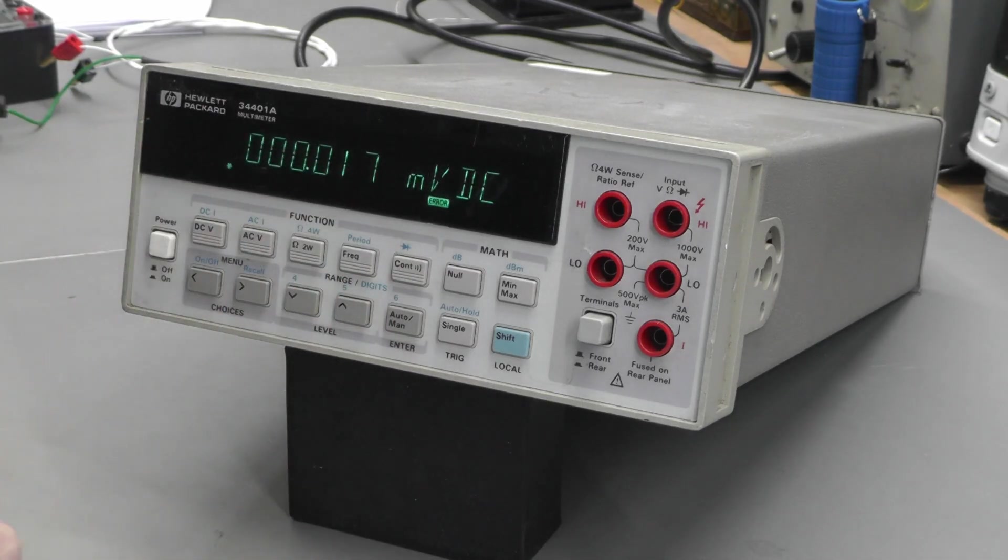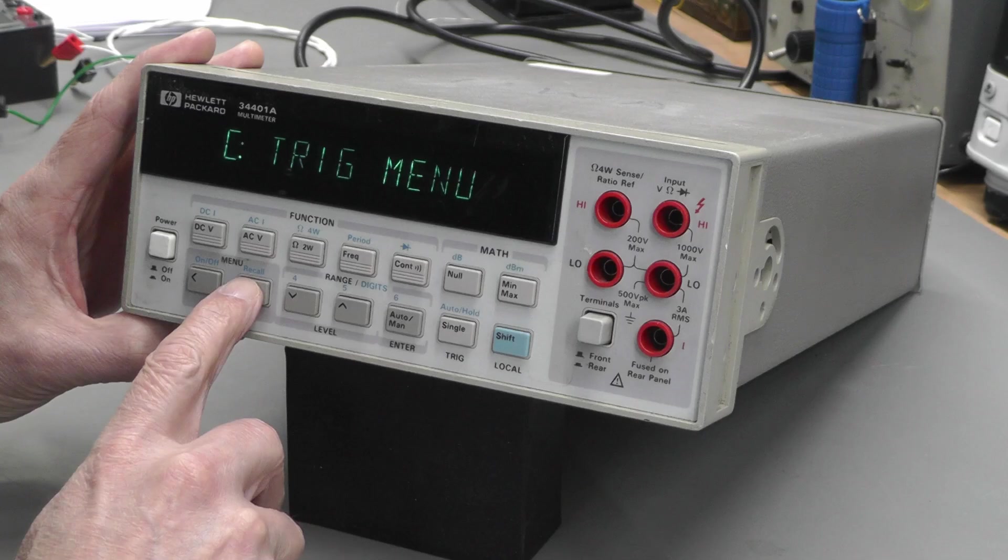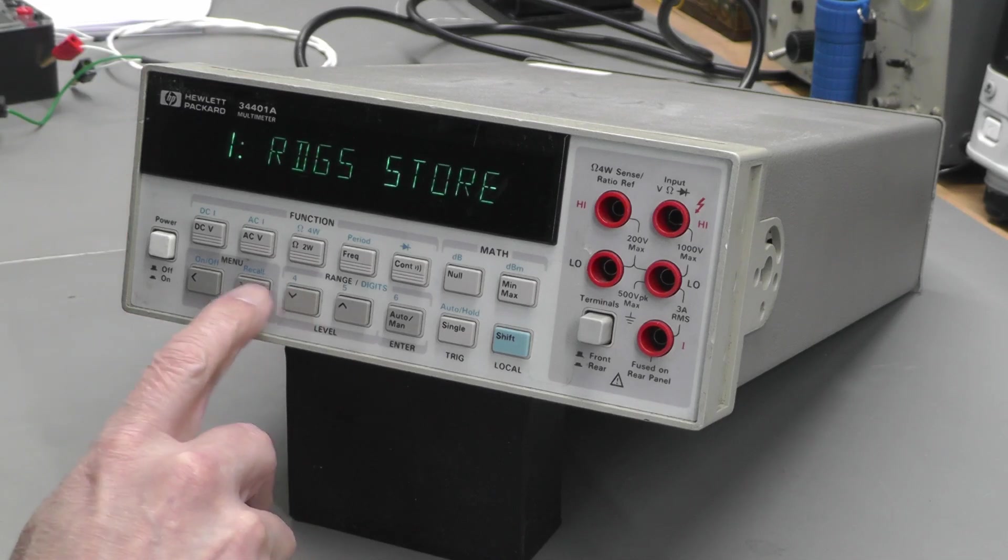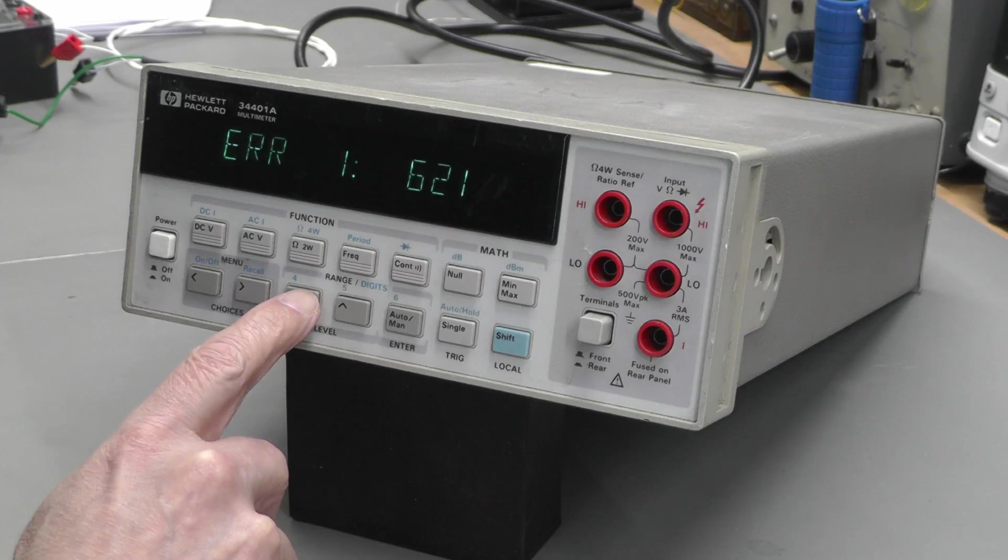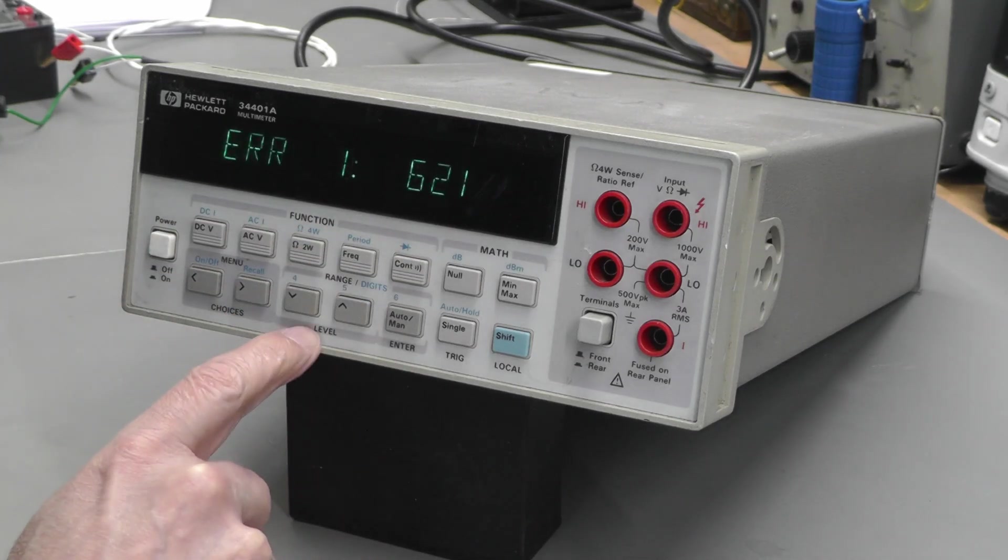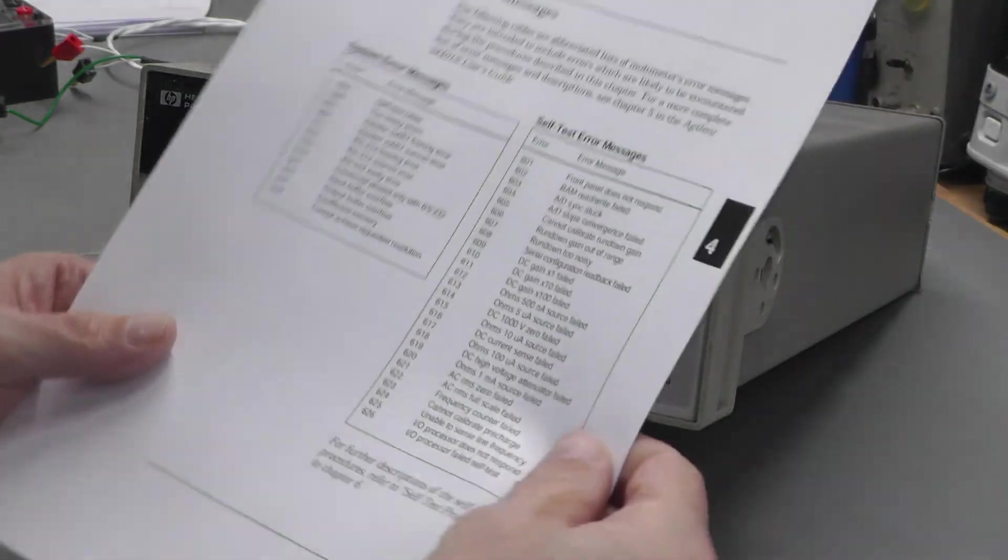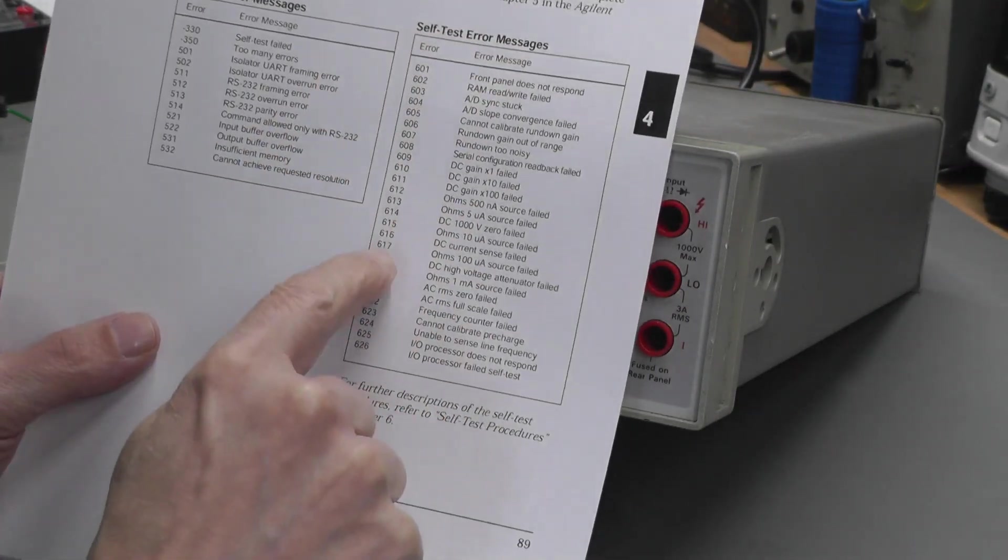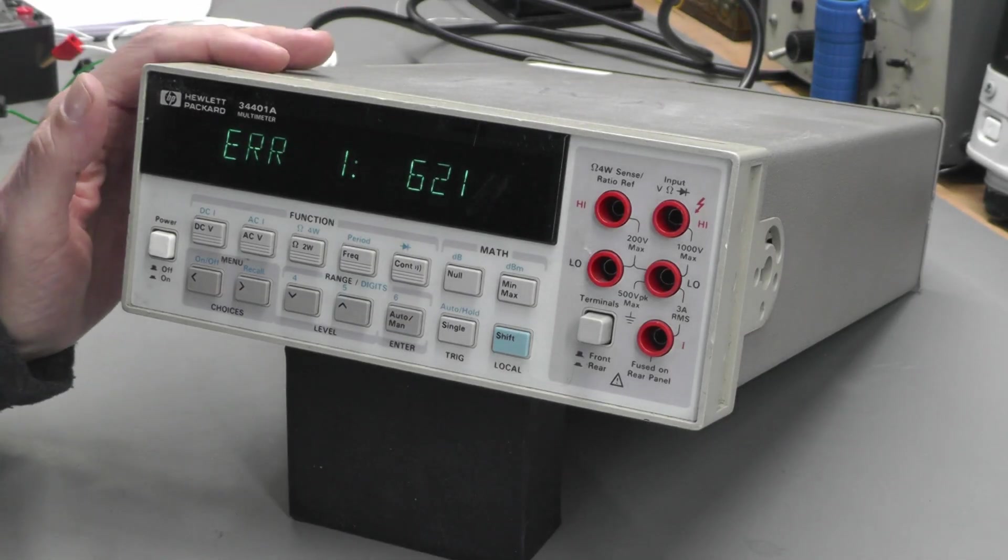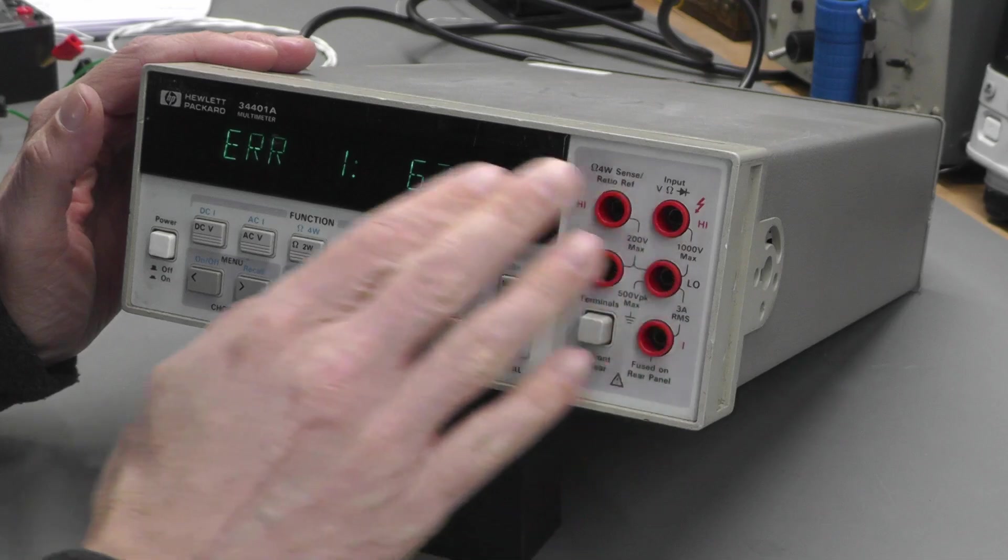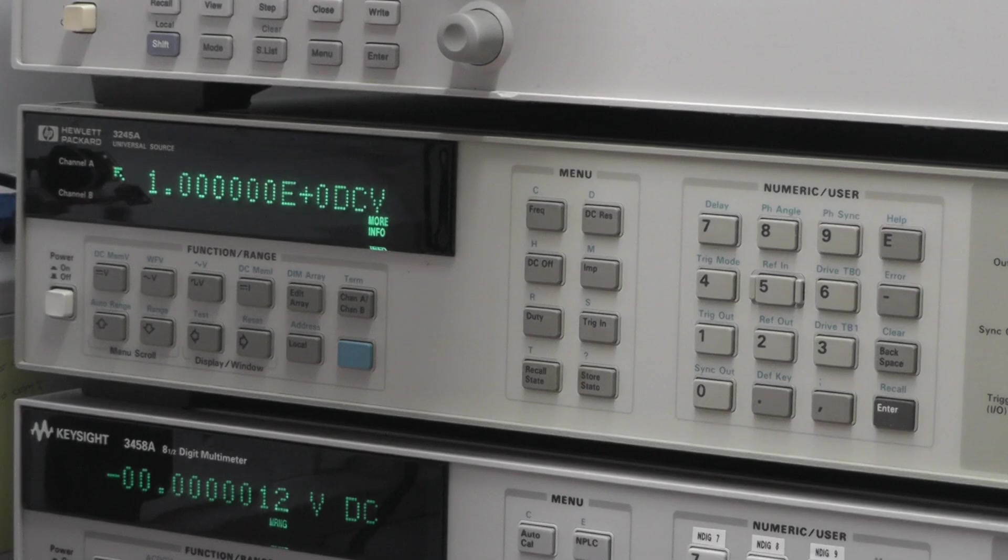Now we need to go in and read back that error. Go into the menu, find the system menu. Error 621, and that's the only error. Let's find out what that one is. Straight from the service manual, self-test error messages 621 is AC RMS full scale failed. Looks like I'm gonna have to put an AC input on the front there and see what sort of voltage readings we're getting on the display, which will put it through the RMS converter.